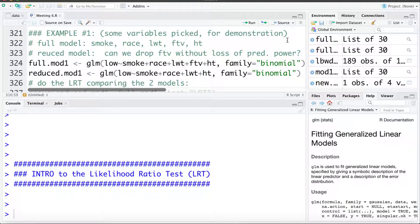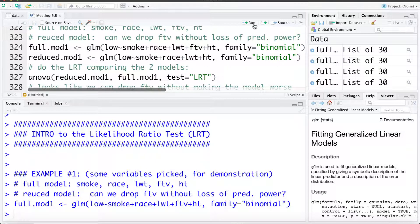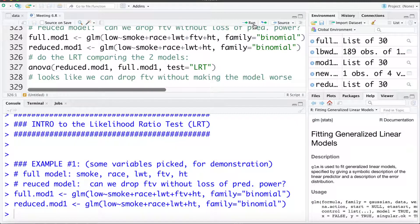For the reduced model we're going to see if we can drop FTV, the number of visits to a physician in the final trimester without loss of predictive power. So first I'm going to fit that full model right here, then we'll fit the reduced model where we drop FTV, and then we'll compare the two models using the LRT or likelihood ratio test.